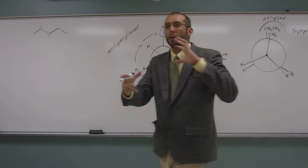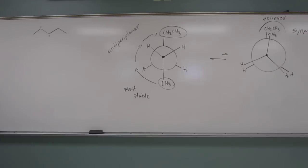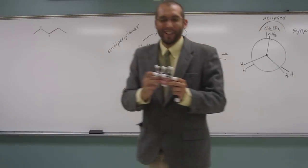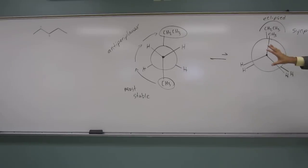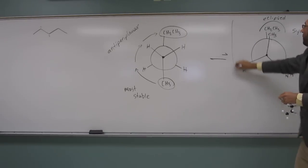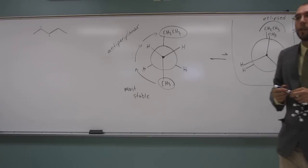So because we've got the two groups eclipsing each other, so this is an eclipse form, this one's called the syn-periplanar. Why? Because the two big groups are zero degrees away from each other. Do we have it? Wonderful. So what we've done here is, so is everybody okay with what we have here? That's the answer to the problem. So the answer to this problem is right here. That's the least stable confirmation if we're looking down the C2, C3.